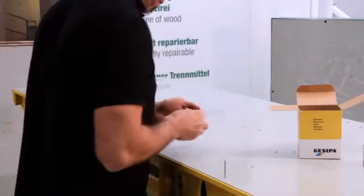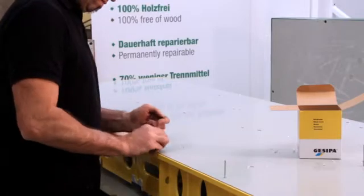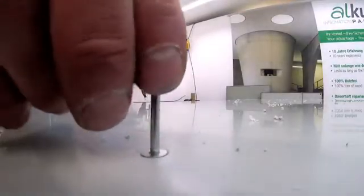AUKUS panels have an extensive service life. Thus, steel rivets are used for installation. Standard electric or pneumatic rivet guns can be used for riveting.